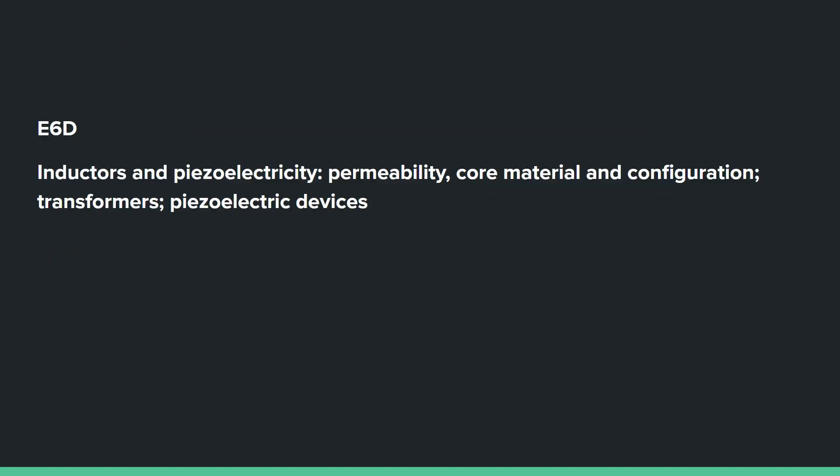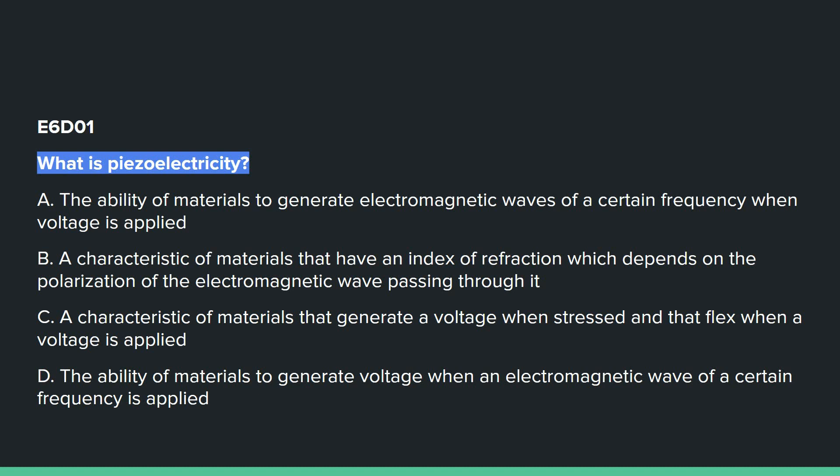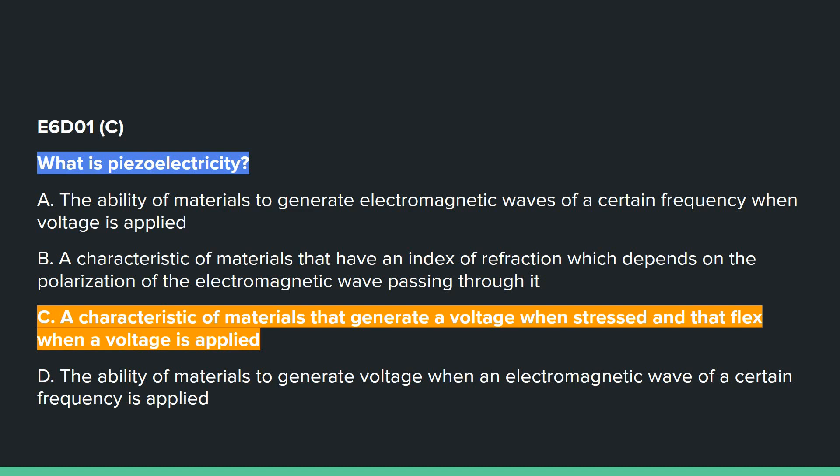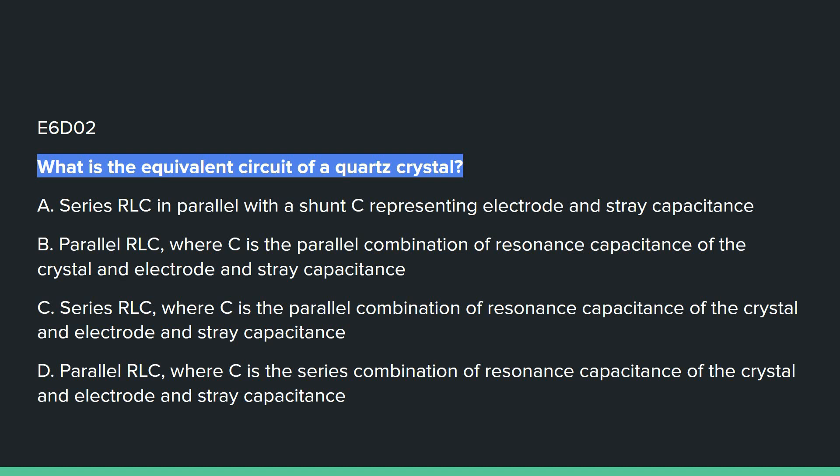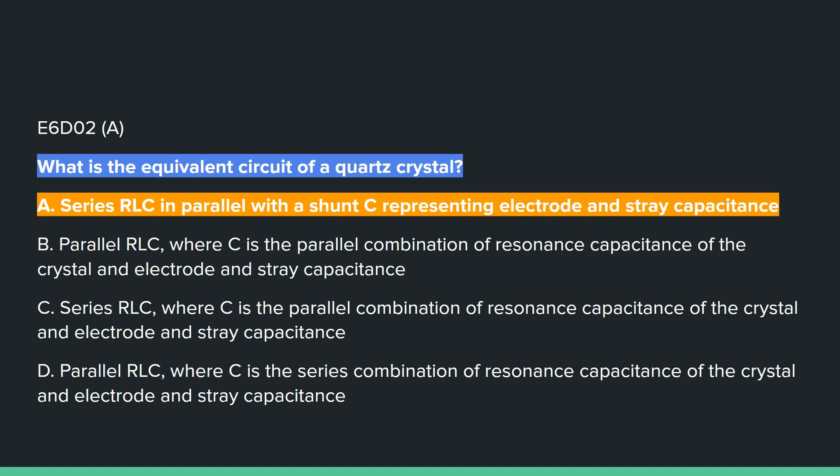E6D covers inductors and piezoelectric permeability, core materials and configuration, transformers, and piezoelectric devices. E6D01: What is piezoelectricity? C, a characteristic of materials that generate a voltage when stressed and that flex when a voltage is applied. E6D02: What is the equivalent circuit of a quartz crystal? A, series RLC in parallel with a shunt C, representing electrode and stray capacitance.